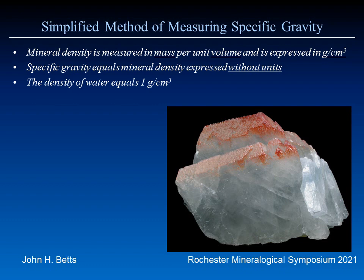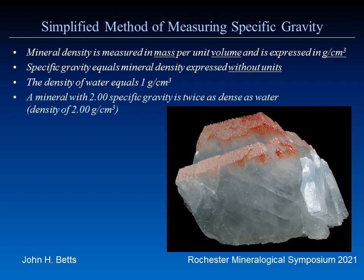The density of water, for comparison, is 1 gram per cubic centimeter — at least liquid water. So a mineral with a specific gravity of 2 is twice as dense as water, therefore 2 grams per cubic centimeter.